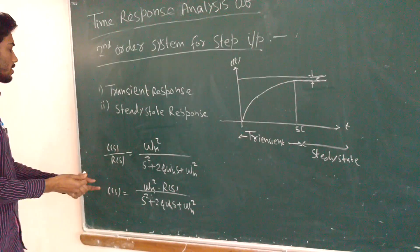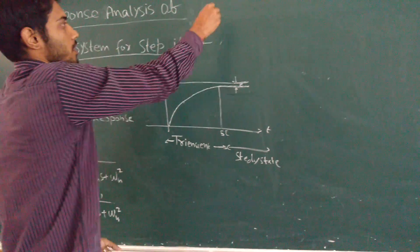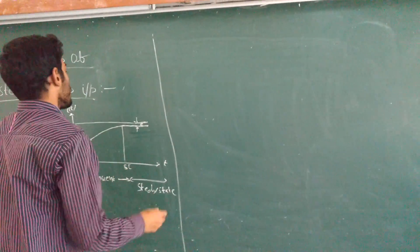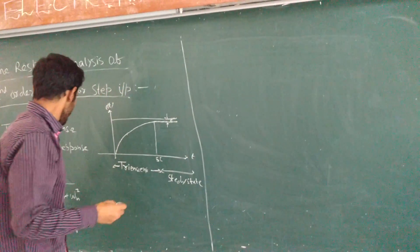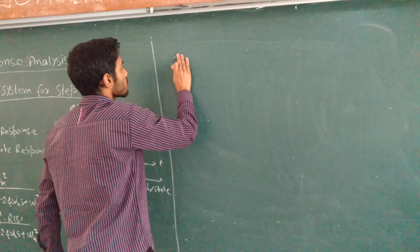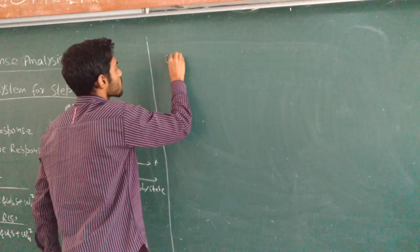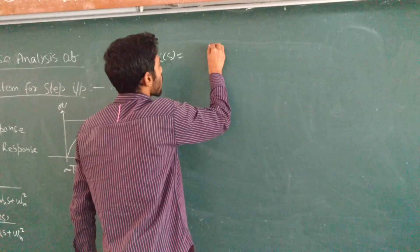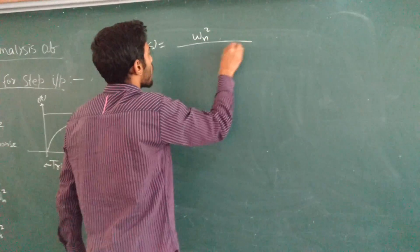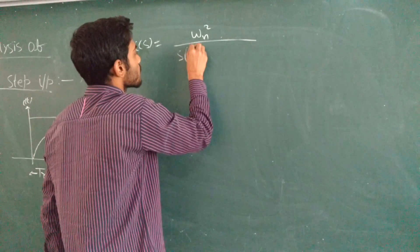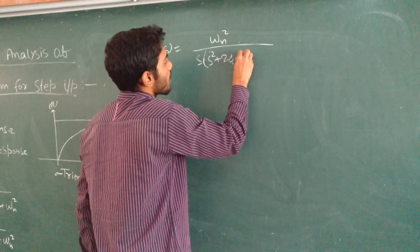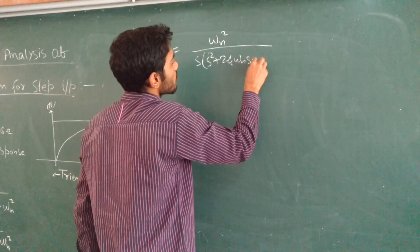So the response C(s) will be ωn² / (s² + 2ξωn·s + ωn²), and since R(s) = 1/s for the step input, this becomes C(s) = ωn² / [s · (s² + 2ξωn·s + ωn²)].